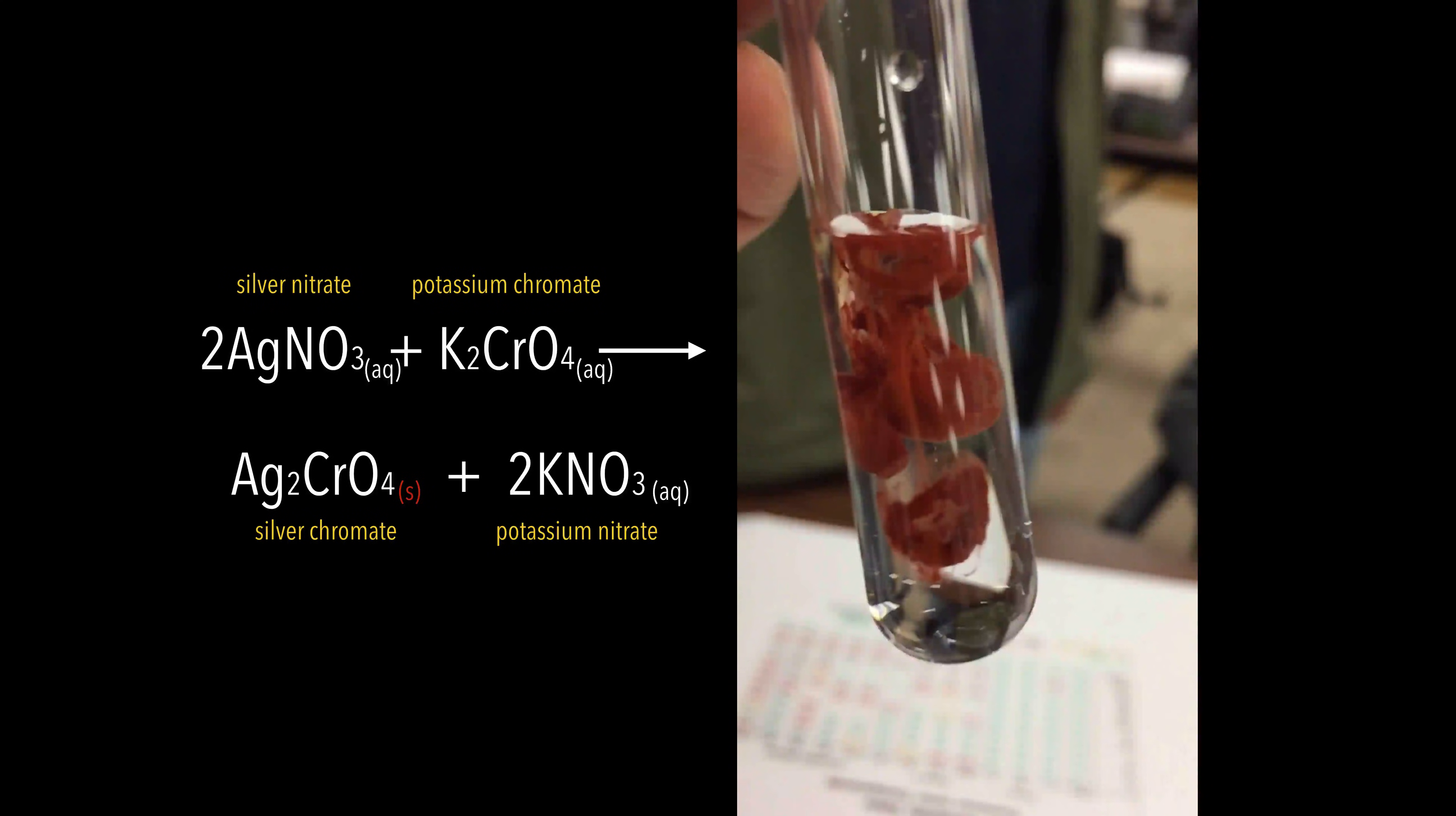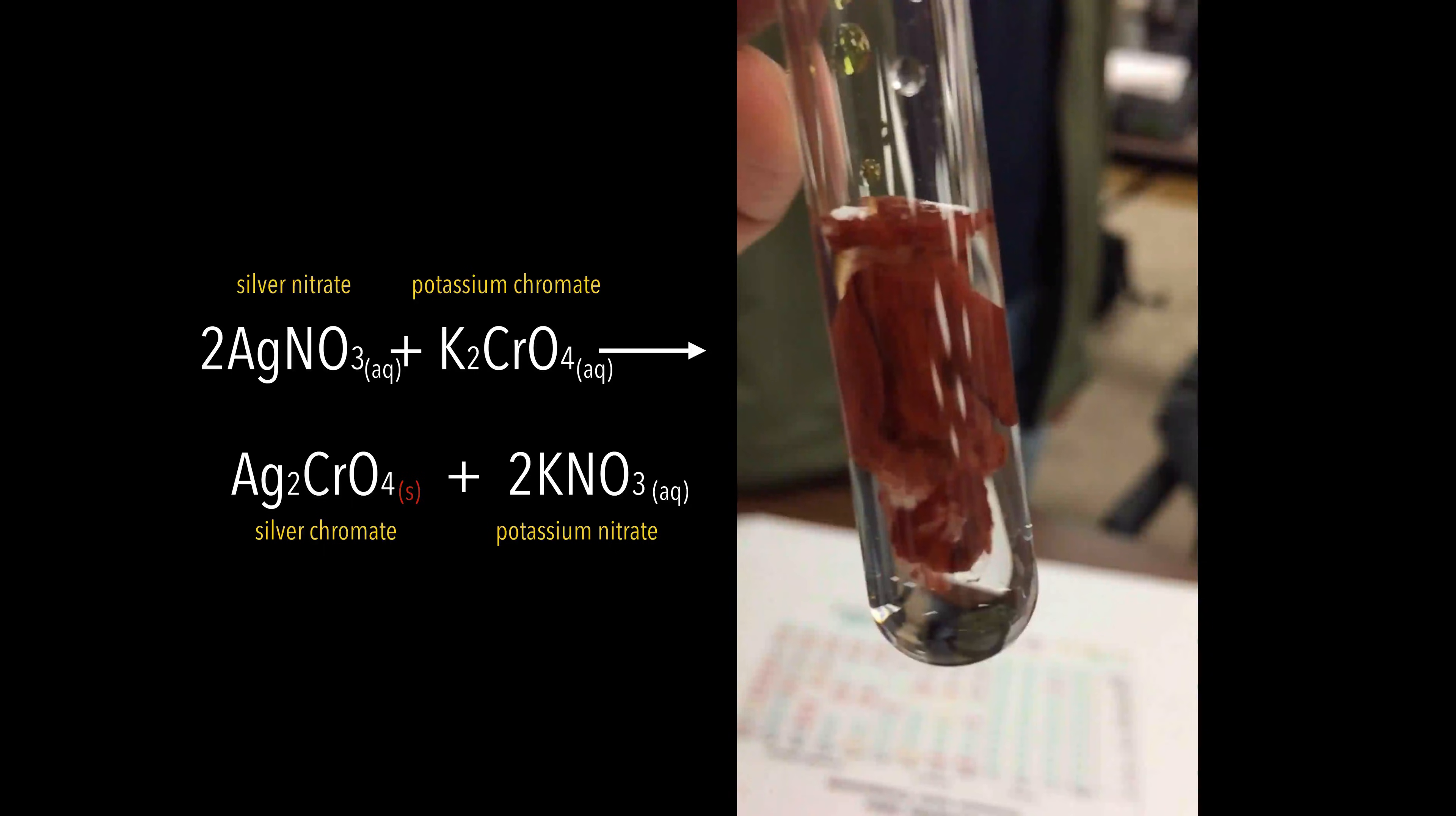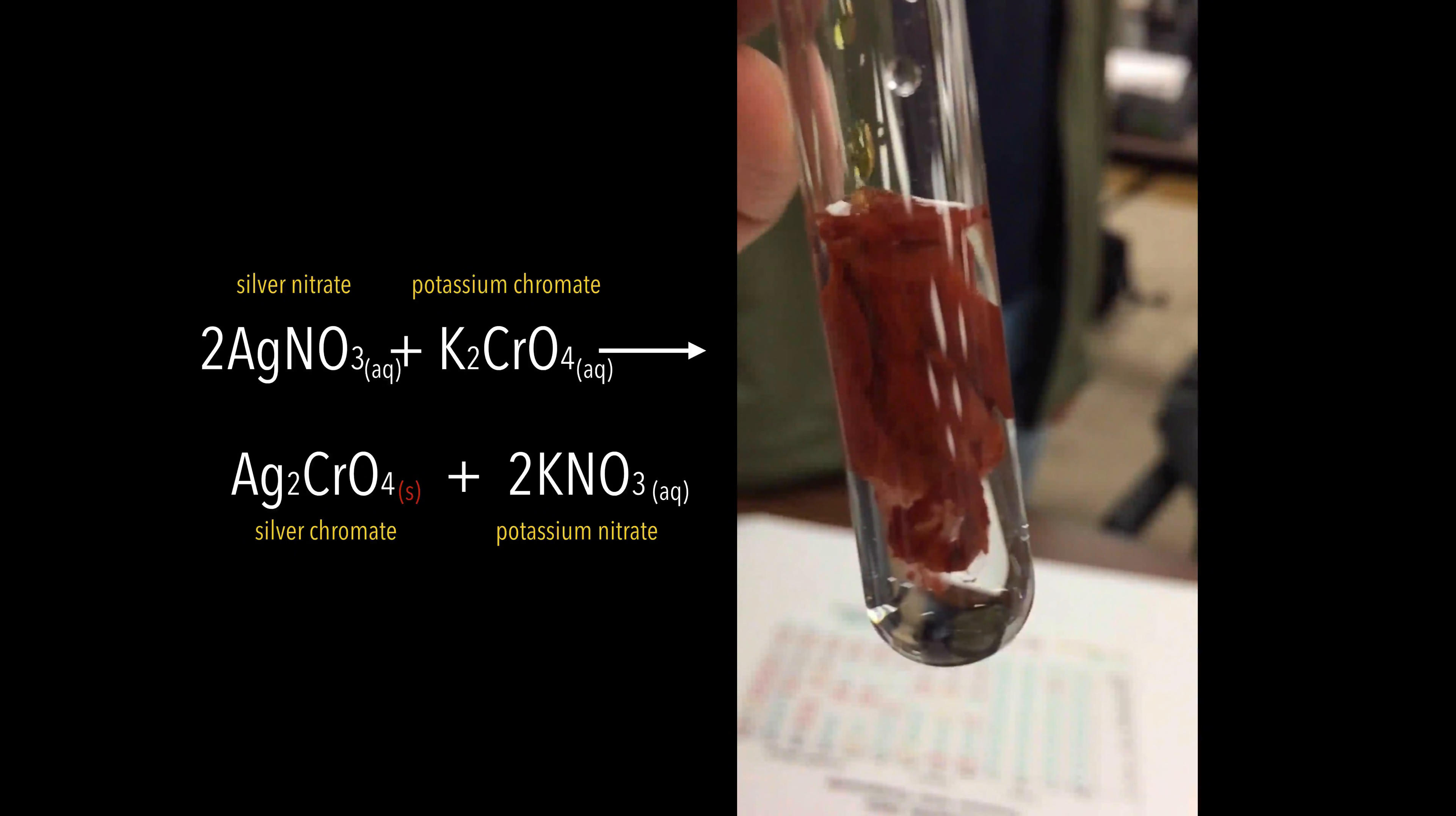Looks pretty cool. Looks like some reddish clouds that are forming. But that's actually a solid or precipitate. The potassium nitrate is a spectator ion. They are not actually involved in this reaction.